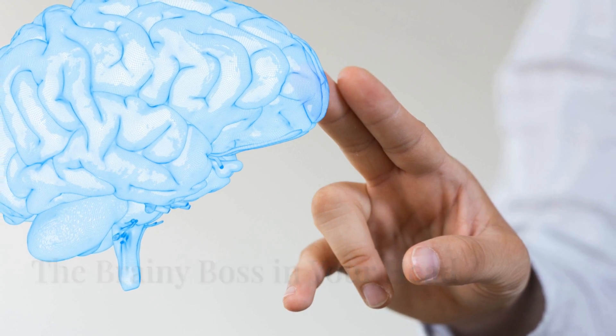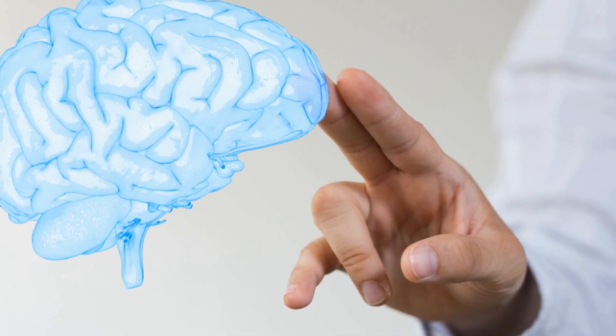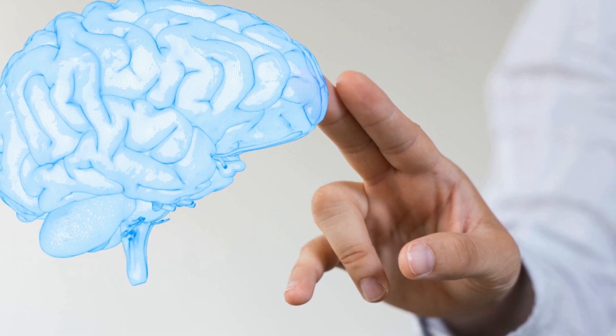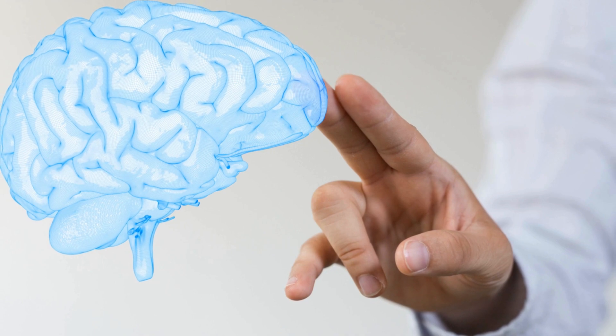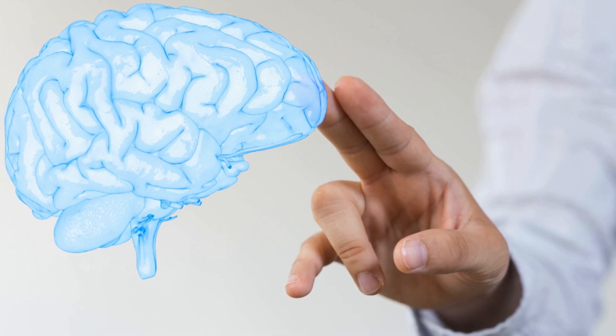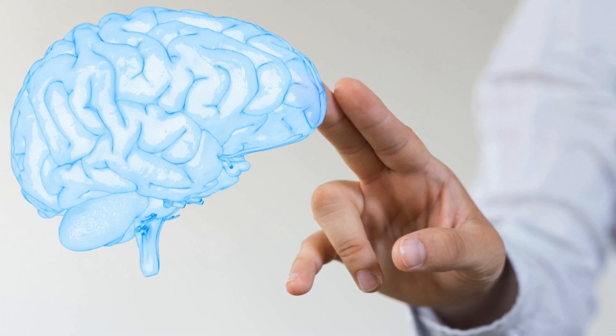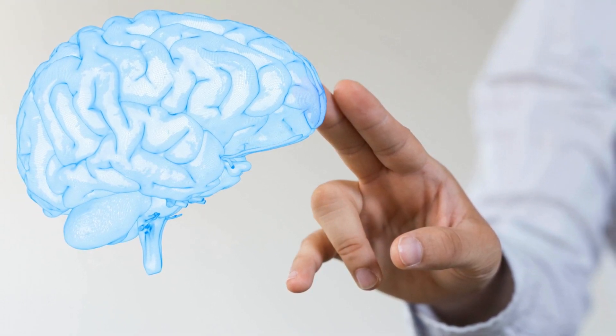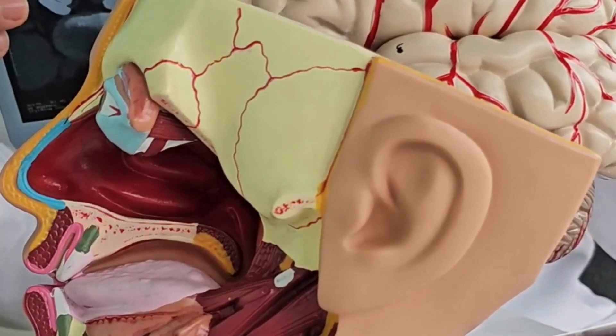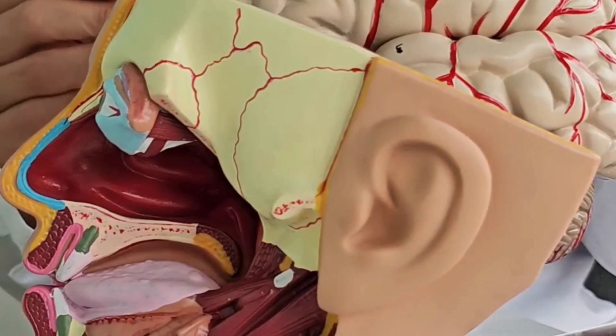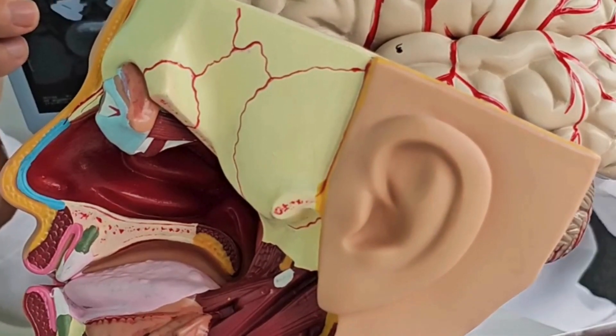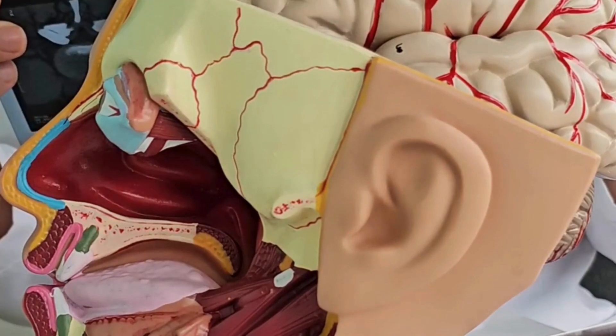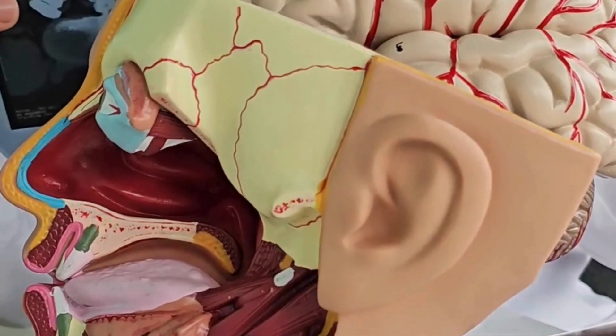Last stop: the brain! This amazing organ sits right inside your head, working all day and night, even while you sleep. It's like the boss of your whole body, making sure everything runs smoothly, from breathing to laughing to learning new things. Protected by your strong, bony skull, your brain is the control center for everything you do, think, and feel. It's always on the job, helping you make choices, remember your favorite stories, and even dream up wild adventures at night.